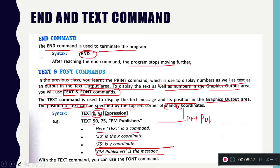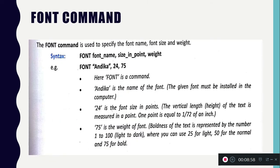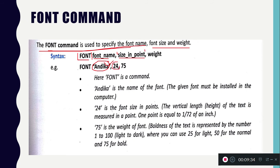With the TEXT command, you can also use the FONT command. The FONT command is used to specify the font name, font size, and weight. Size means how big the text is, and weight means its thickness. The syntax is: font fontname, size, weight — where fontname is the name of the font, size is in points, and the font must be installed in your computer.